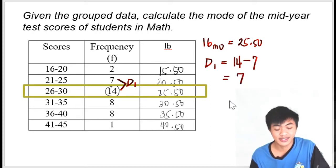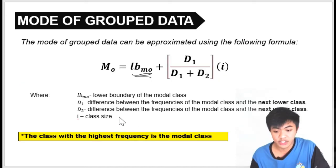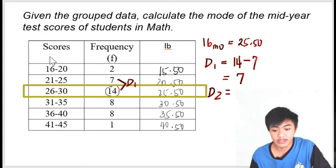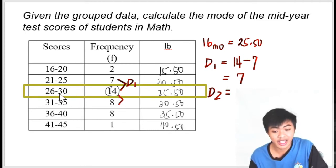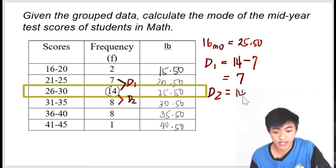D sub 2, on the other hand, is the difference between the frequencies of the modal class and the next upper class. Back to the table: frequency of the modal class and the next upper class. This is the modal class, the next upper class is 31 to 35. So that is 14 minus 8, which equals 6.